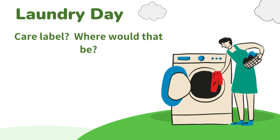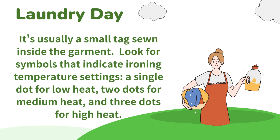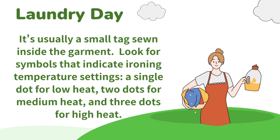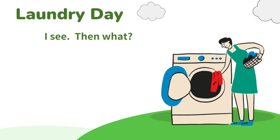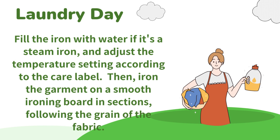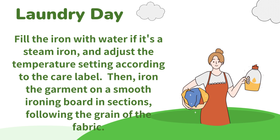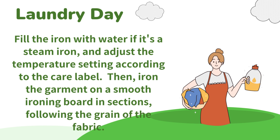Care label? Where would that be? It's usually a small tag inside the garment. Look for symbols that indicate ironing temperature settings. A single dot for low heat, two dots for medium heat, and three dots for high heat. Then what? Fill the iron with water if it's a steam iron, and adjust the temperature setting according to the care label. Then iron the garment on a smooth ironing board in sections, following the grain of the fabric.